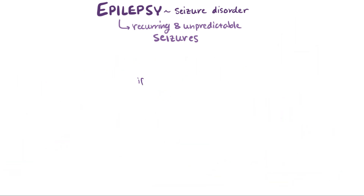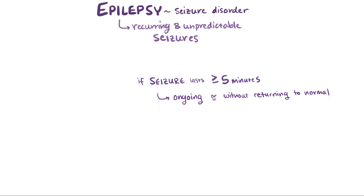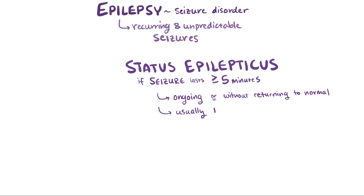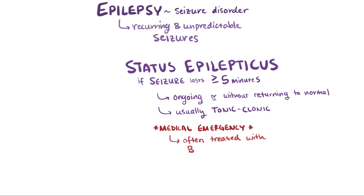If seizures last for a longer period of time — like over 5 minutes of ongoing seizures, or having multiple seizures without returning to normal in between — then it's called status epilepticus. These are usually the tonic-clonic subtype, but it can also be caused by other types that don't involve convulsions. This situation is considered a medical emergency and can be life-threatening if not treated immediately. Patients are often treated acutely with benzodiazepines, which help enhance the effect of the inhibitory neurotransmitter GABA.